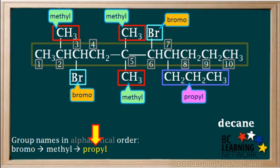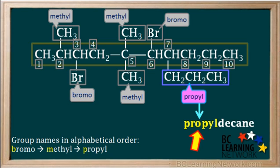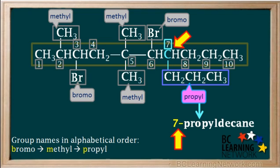The last name on the alphabetical list is propyl, so we'll add propyl to the name right next to decane. Next, we must specify which carbon atom in the chain the propyl group is attached to. Looking closely, we see that the propyl group is attached to carbon 7, so we write 7 and a dash just before the propyl.